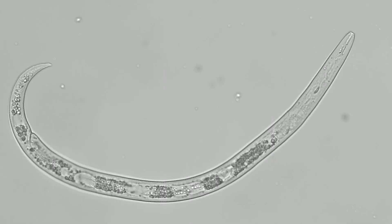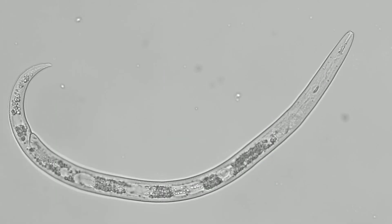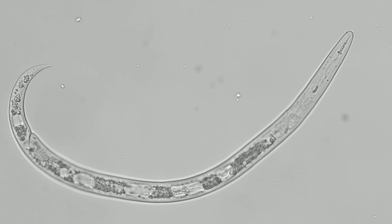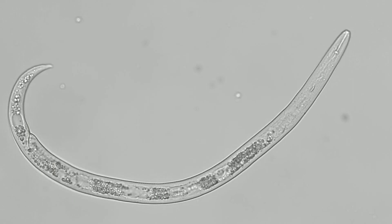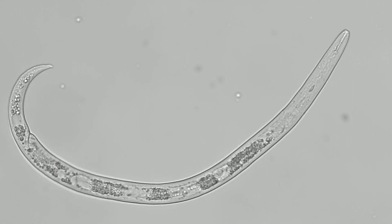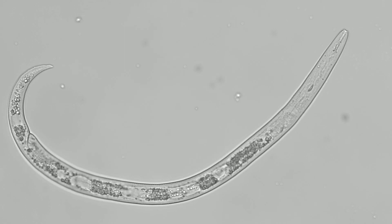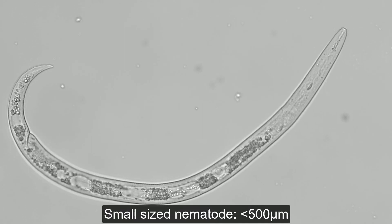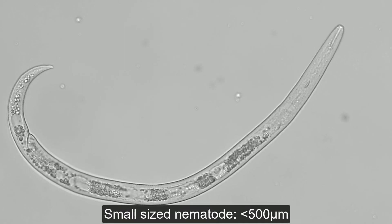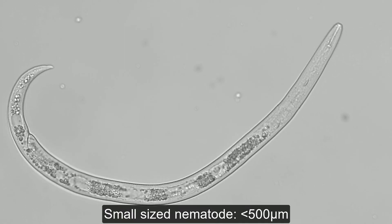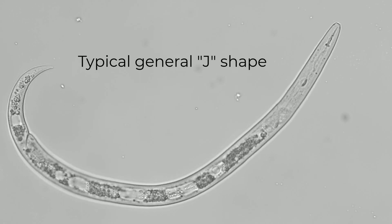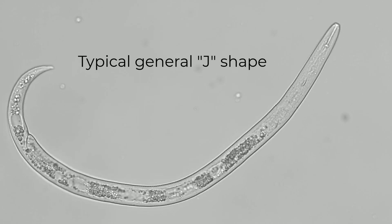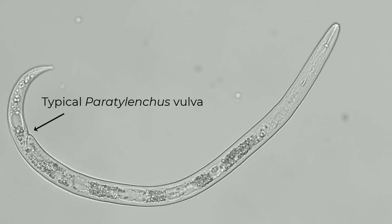In this second part of the video, we will observe these characters in detail with the aid of a microscope. At this level of magnification, we can observe the size of the nematode, which in this case is generally small. We can also see the typical general shape and also the position of the vulva.